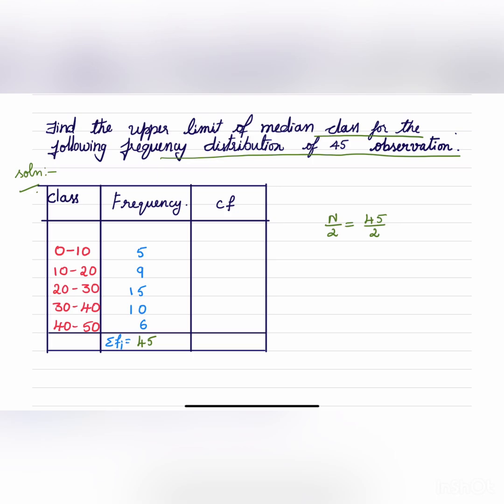So it's 45 observations, that is sigma F is 45, that is sum of frequencies. Now we have to find out CF.